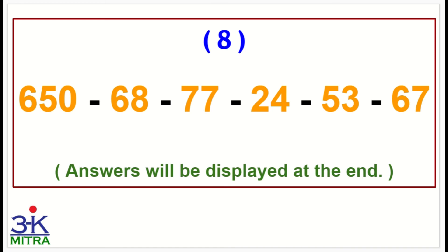Next, ninth sum now. 650 again, then minus 58, minus 42, minus 69, minus 66, minus 33. That is, write down the answer.